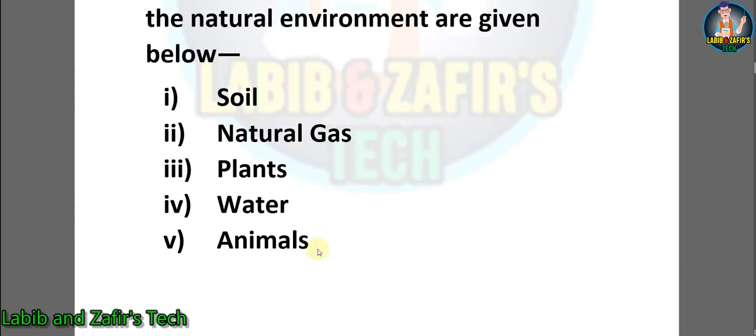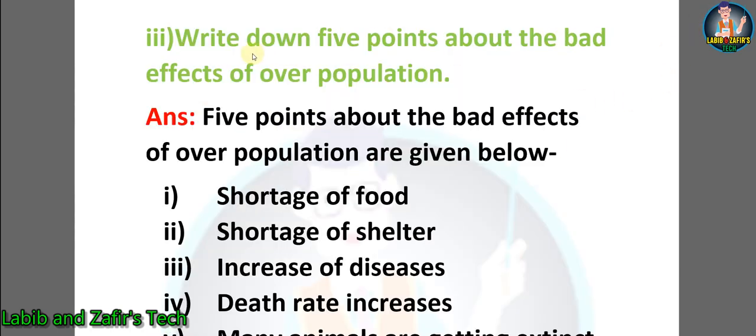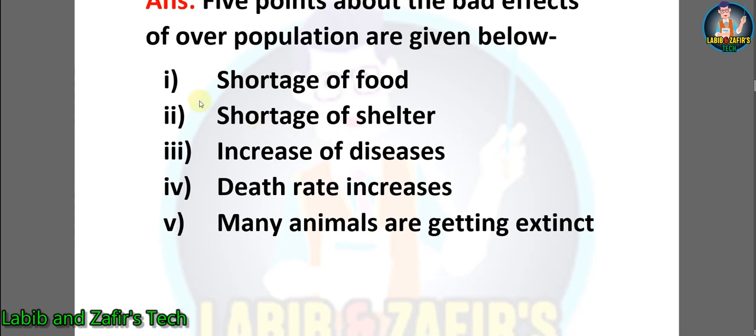Number three: write down five points about the bad effects of overpopulation. Answer: five points about the bad effects of overpopulation are: number one, shortage of food; number two, shortage of shelter; number three, increase of diseases; number four, death rate increases; number five, many animals are getting extinct.